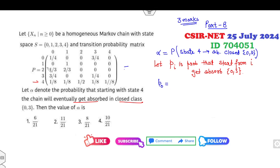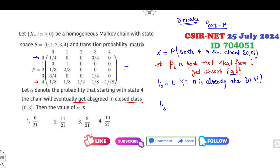For state 0: P_0 = 1, because state 0 is already in the closed set {0, 3}, so absorption is certain. Similarly, P_3 = 1, because state 3 is also already absorbed in the closed state {0, 3}.